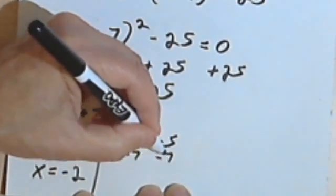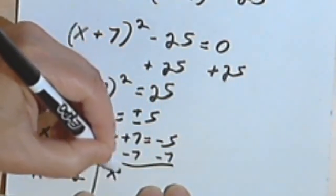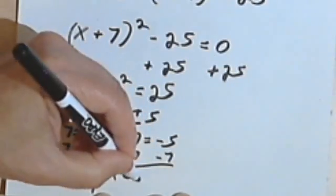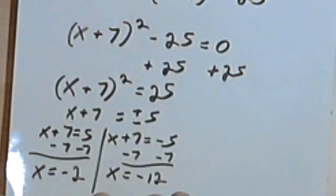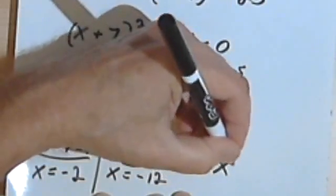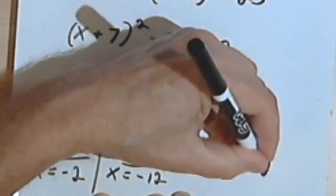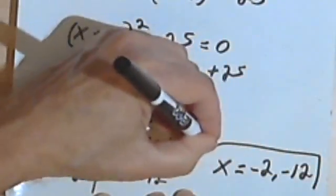And over here, I'll get x equals negative 5 minus 7 is negative 12. So I've got x equals negative 2, comma, negative 12.